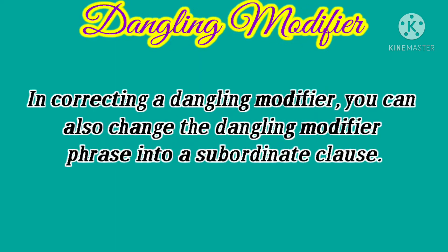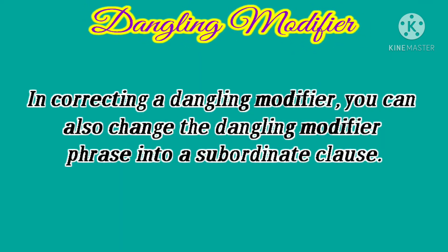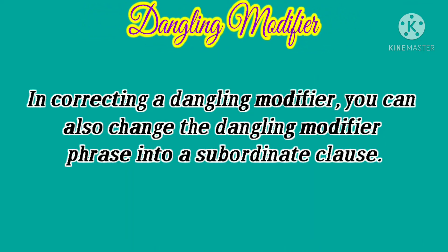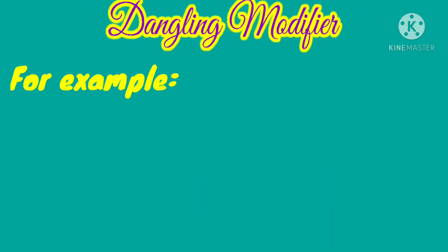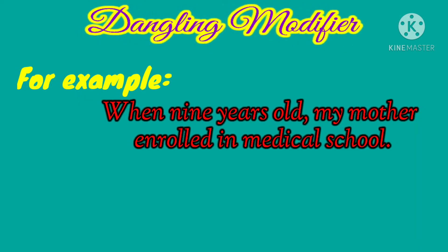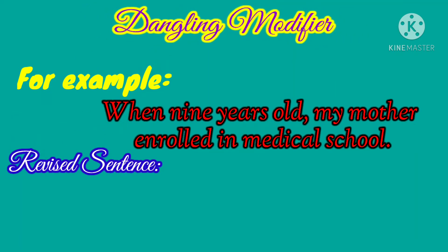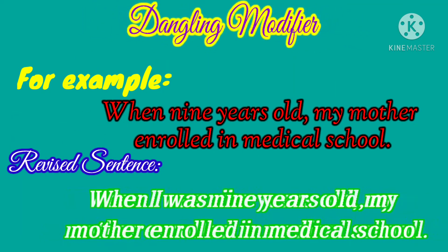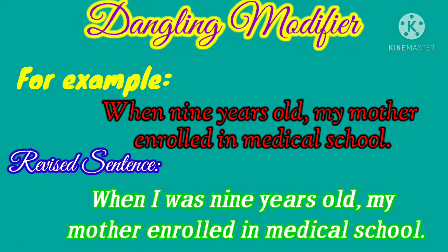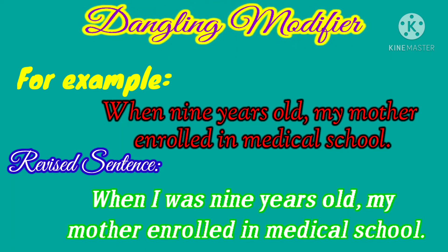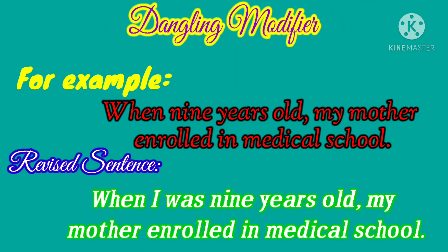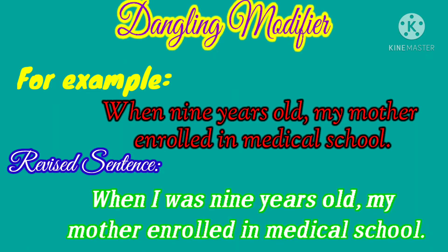You can also correct a dangling modifier by changing the dangling modifier phrase into a subordinate clause, creating a subject and a verb. For example: 'When nine years old, my mother enrolled in medical school.' The revised sentence is: 'When I was nine years old, my mother enrolled in medical school.' Now the modifier 'when I was nine years old' correctly modifies 'I,' not 'my mother,' who was not nine years old when she enrolled.